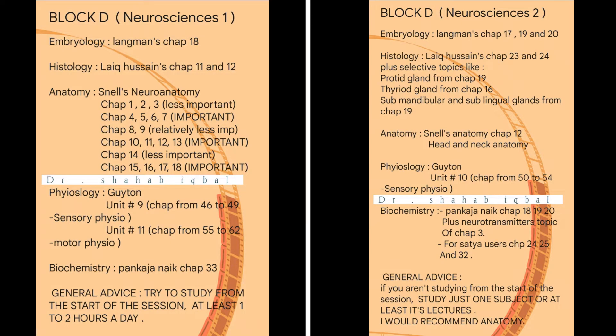Coming to the course of Block B, it contains two modules: Neurosciences 1 and Neurosciences 2 — simply NS1 and NS2. The portion of each subject is now shown on screen, so you can take a snapshot here. Credits for this review go to the Medical Beep MCQs page; there is no need for me to explain everything as it will make the video longer.